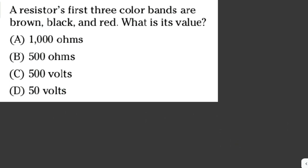A resistor's first three color bands are brown, black, and red. What is its value? You need to read a resistor's color bands from left to right. The first band denotes the first digit, the second band denotes the second digit, and the third band denotes the subsequent number of zeros.